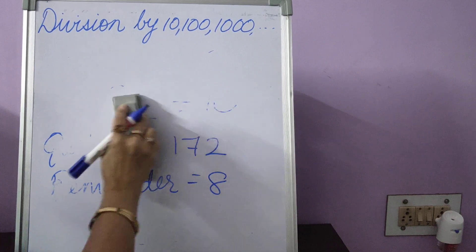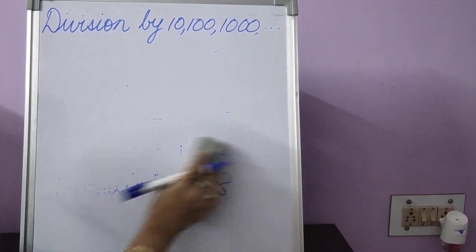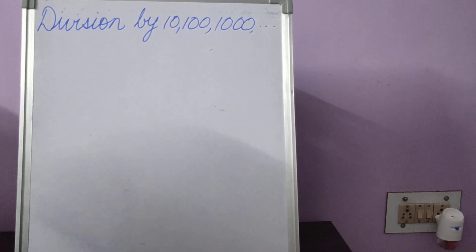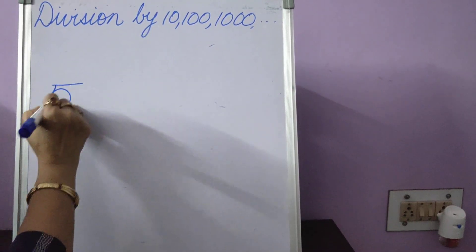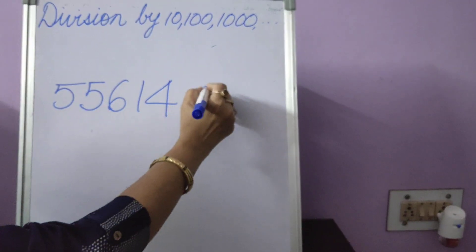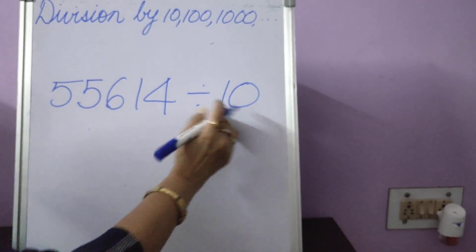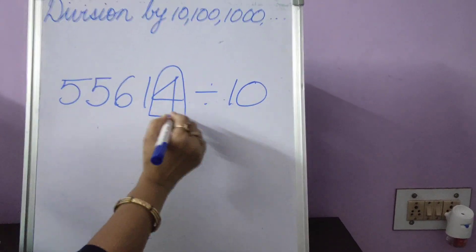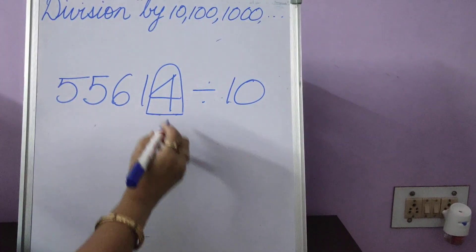So howsoever big your dividend is, it will not make any difference. The same method will be there. Let's take a bigger number. 55,614 divided by 10. One zero, one place. Put it in a circle.